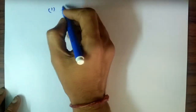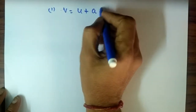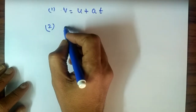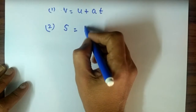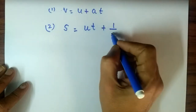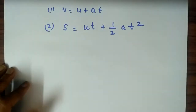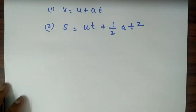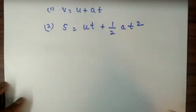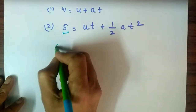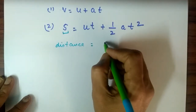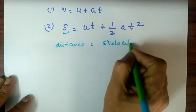The first equation of motion is V = U + AT. Our second equation is regarding distance. To prove it mathematically, we note that distance equals speed or velocity multiplied by time.